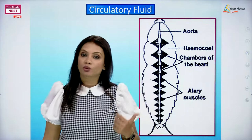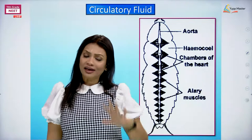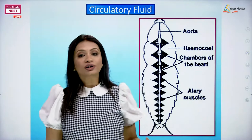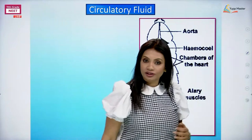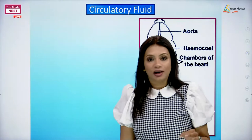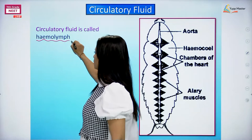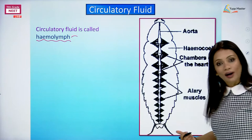We've covered the hemocoel and the heart - including chambers and alary muscles. Now let's come to the third part: the circulating fluid of the cockroach, also called hemolymph. Hemolymph, as I told you in the beginning, is not going to be red in color because it does not have the respiratory pigment called hemoglobin. That's why it is left with a white color and we're going to be calling it hemolymph - because lymph is white in our body and their circulating fluid is also white.